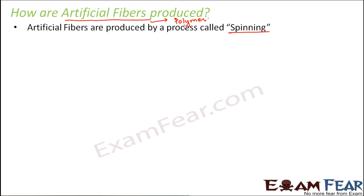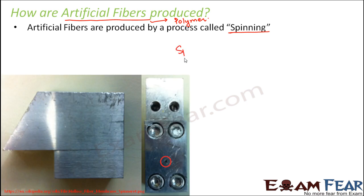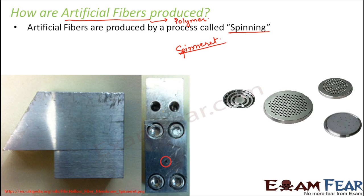This thick and viscous polymer is then passed through a device called a spinneret. A spinneret is a disc-like structure which has holes on it, and the viscous polymer comes out through those holes. Spinnerets exist in many different shapes — they are all disc-like structures with many holes through which the polymer emerges as a very thick, viscous liquid.